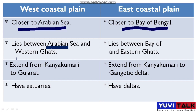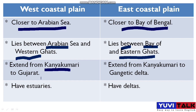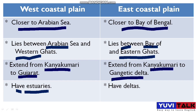The East Coastal Plain lies between the Bay of Bengal and the Eastern Ghats. The third difference is that the West Coastal Plains extend from Kanyakumari to Gujarat, while the East Coastal Plains extend from Kanyakumari to the Gangetic Delta. The fourth difference is that the West Coastal Plains have estuaries, while the East Coastal Plains have deltas.